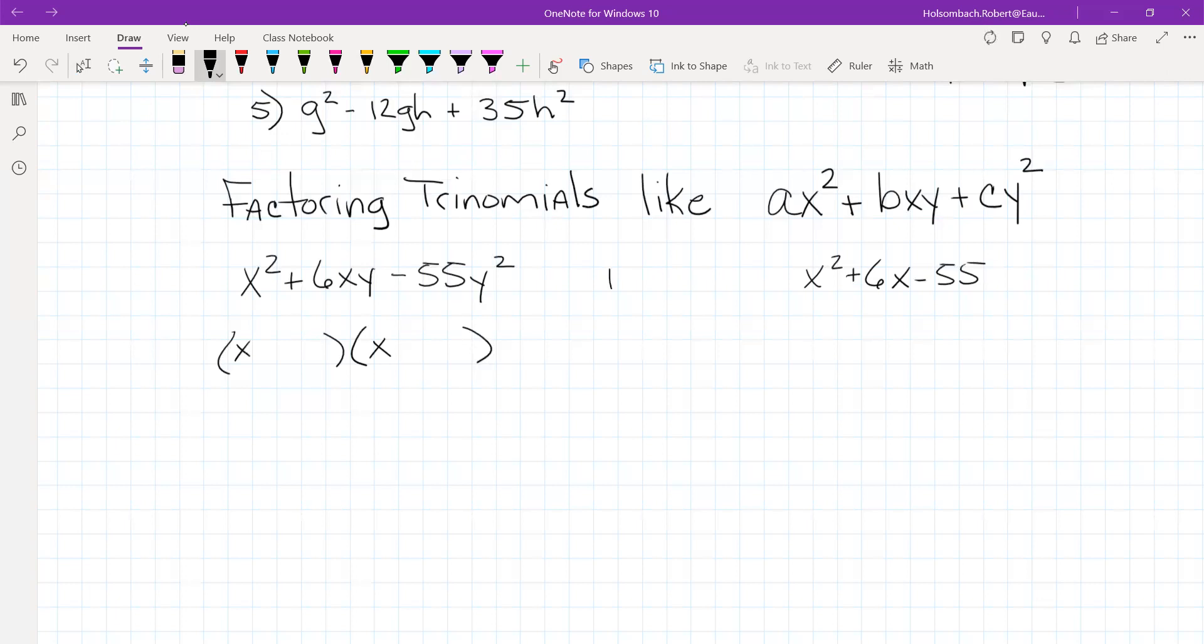So we've got 1 and 55. Those don't add up to 6. And then we've got 5 and 11. And with 5 and 11, we can get to 6.